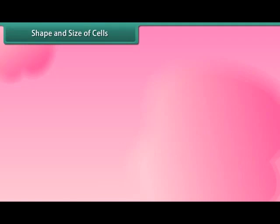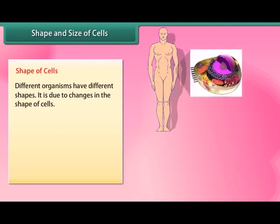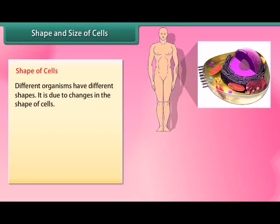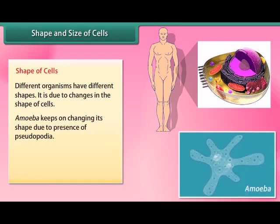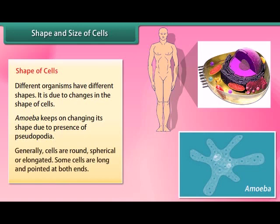Different organisms have different shapes, and this is due to changes in the shape of their cells. Amoeba keeps on changing its shape due to the presence of pseudopodia. Generally, cells are round, spherical, or elongated. Some cells are long and pointed at both ends.